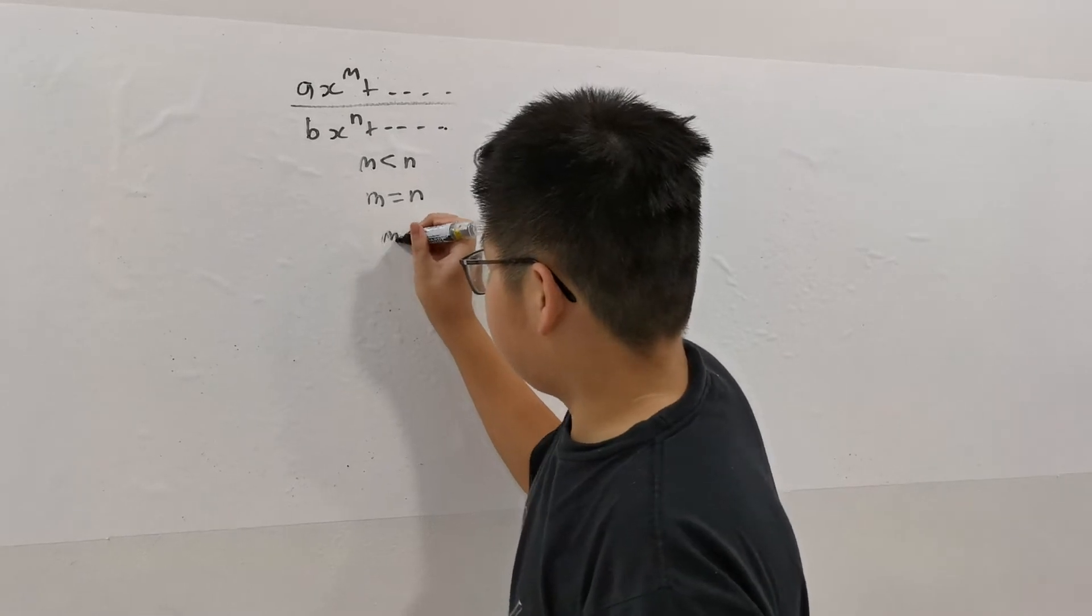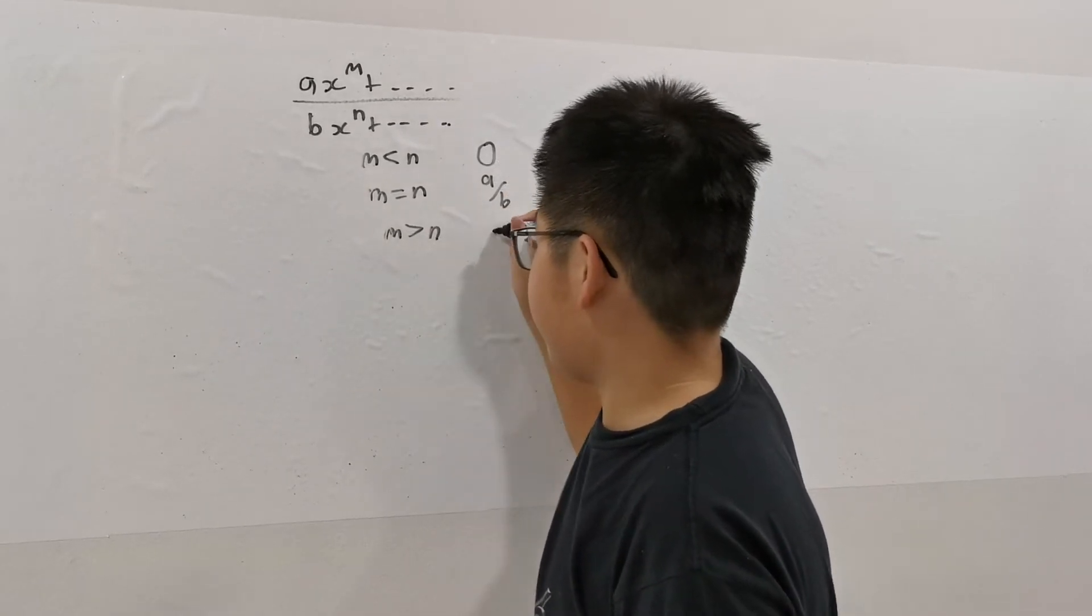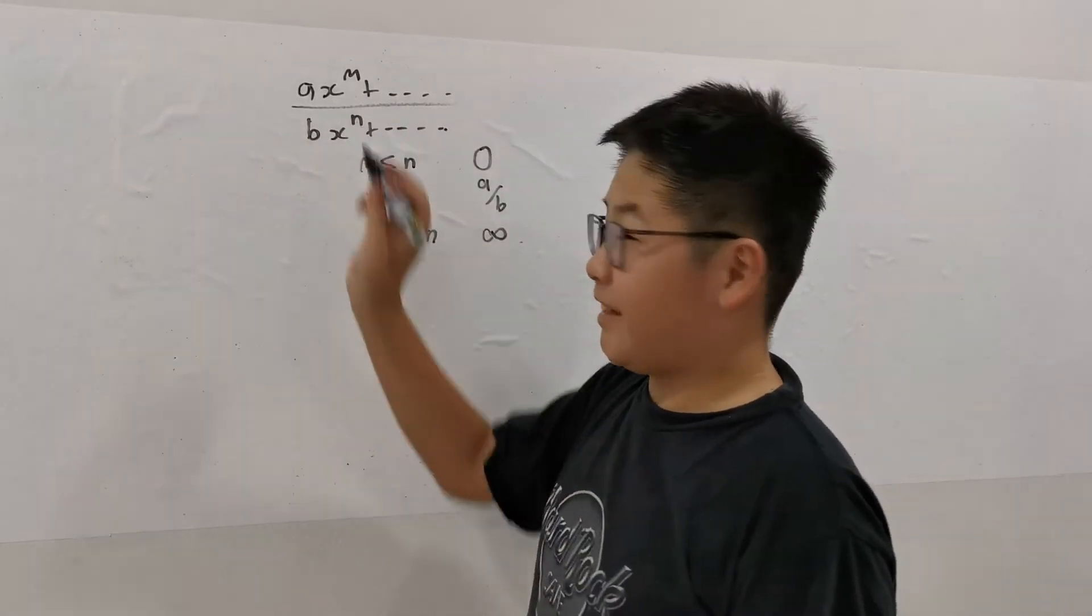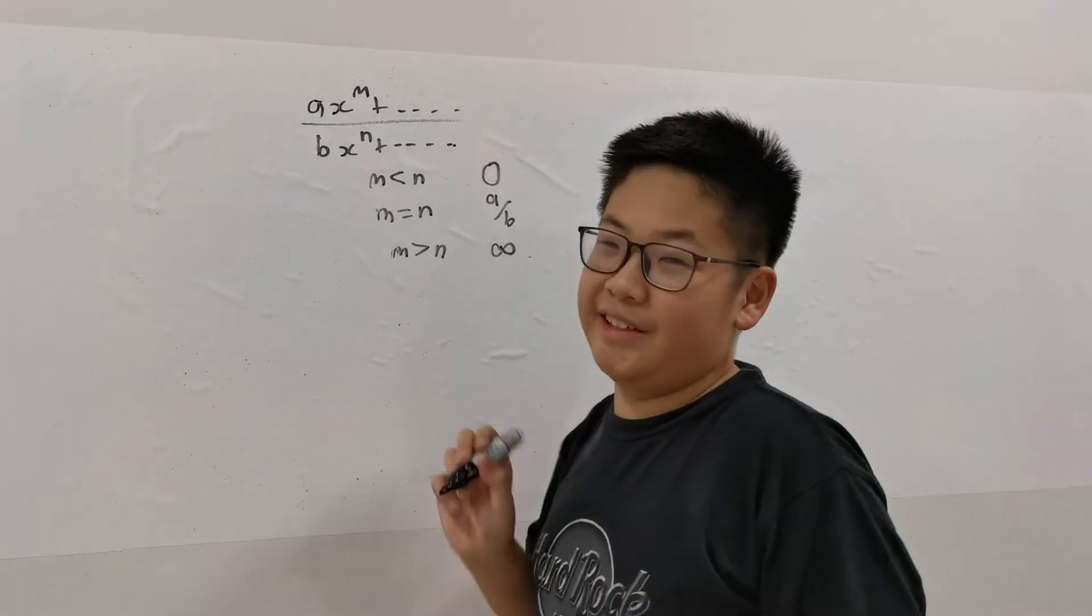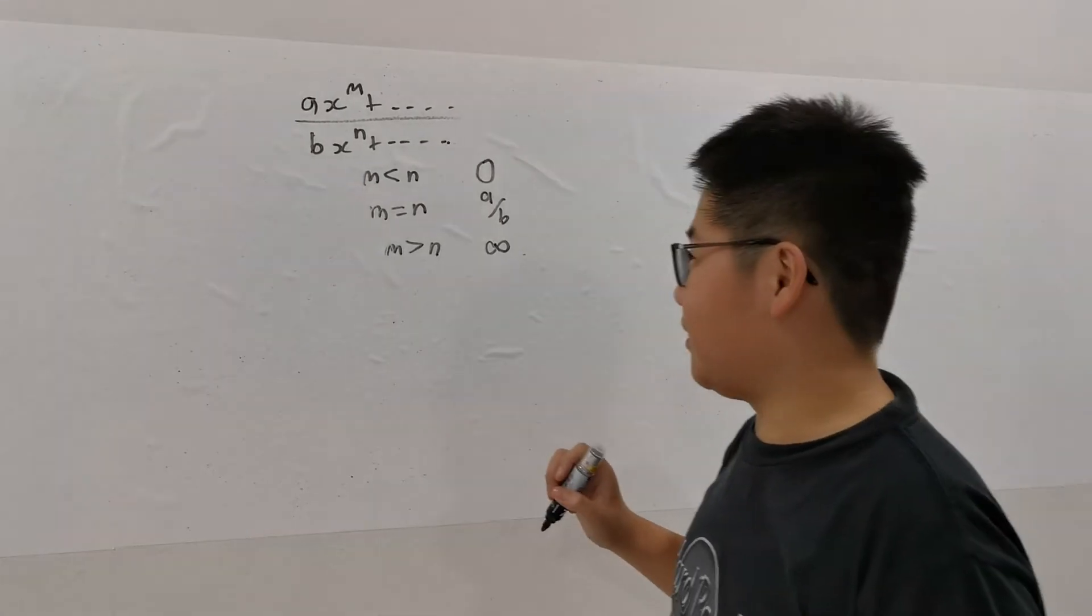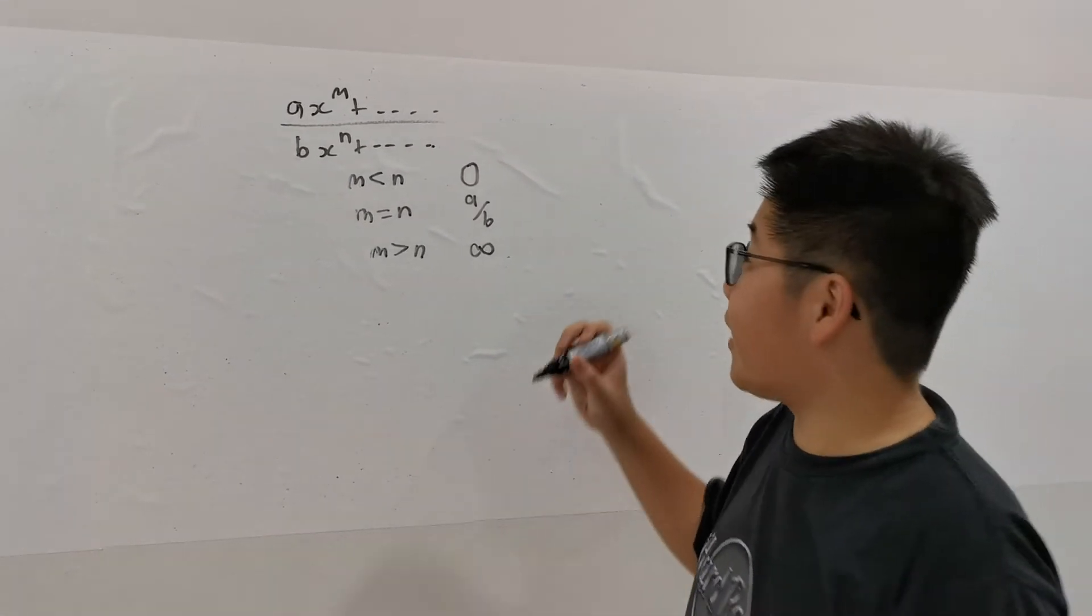How about M greater than N? It will tend to infinity. So basically, even if A is something like a millionth, it will look like infinity. So the limit will tend to infinity. So now let's try a few functions.